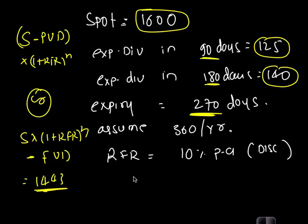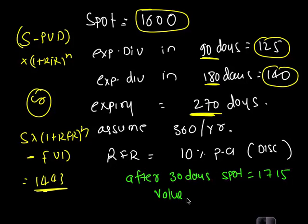Now let us say after 30 days, spot price is 1715. Can you find out the value of this particular forward contract? After 30 days, same contract, spot price has become 1715. What is the value of the forward contract? The way you do this is 1600 × 1.1^(1/12). How much is this? 1612. And then your answer is 103.